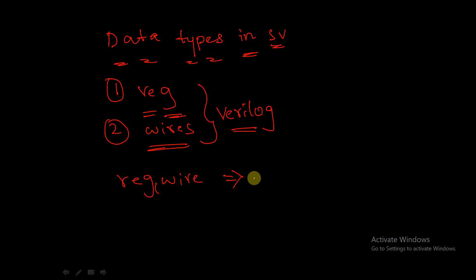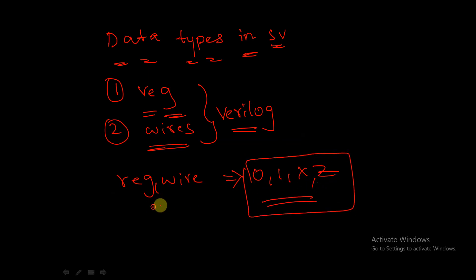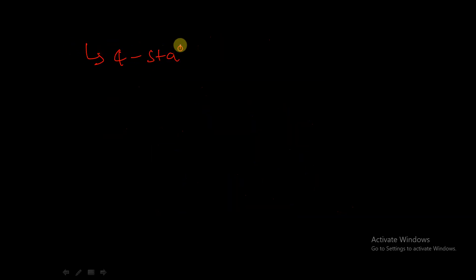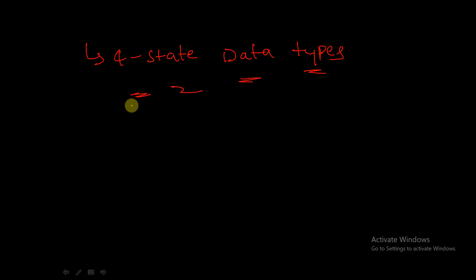They can hold zero, one, X, and Z. So these are the possible values which these data types can contain. There are four values, so that's why these are called four-state data types. Zero, one, X, and Z — these are also called four-state data types.